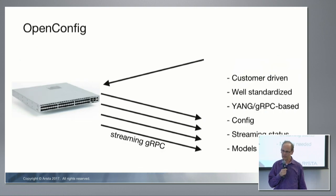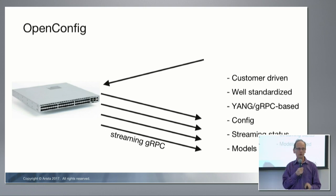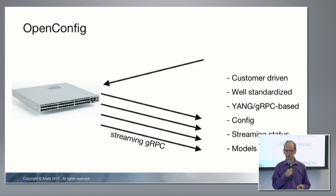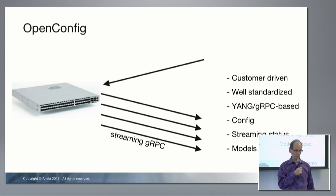The second one is OpenConfig. I'm very excited about this. We've always wanted a standardized, programmatic way to access switches, but we didn't feel like we had the industry pull to make a cross-vendor standard succeed. Fortunately, Google and AT&T do.